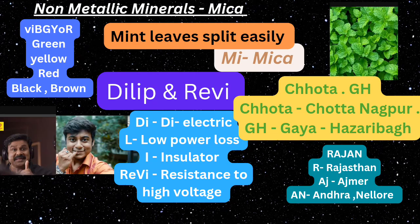For mica, remember the sentence: 'mint leaves split easily.' Here, 'mi' stands for mica, and 'leaves' means mica is a mineral made up of a series of leaves. Have you seen mint leaves? They are very thin, and you can easily split them. Likewise, mica splits easily into thin sheets.